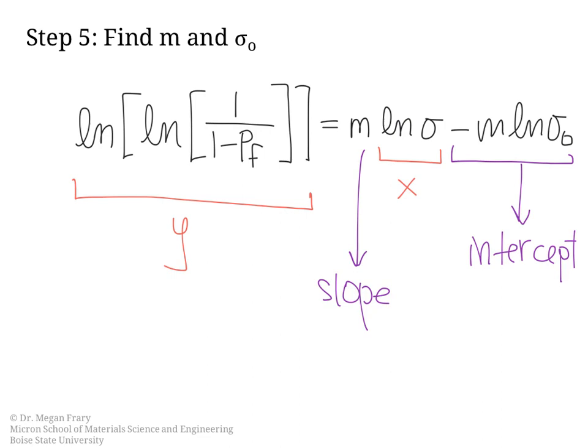The value of M will come out as the slope, and this term here will be the intercept of this line. So we would essentially apply this equation to each of the stress and the Pf values, and then we will plot those.